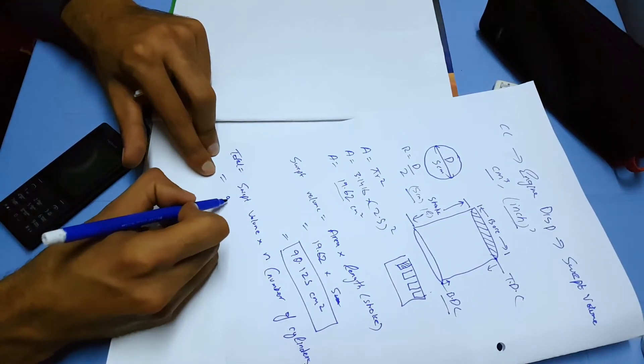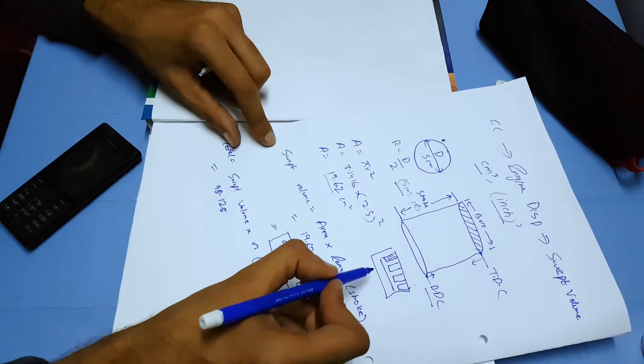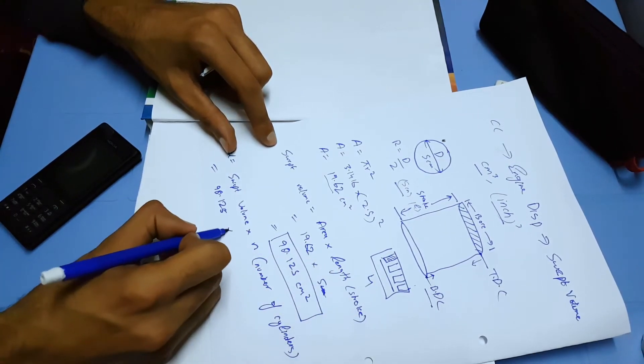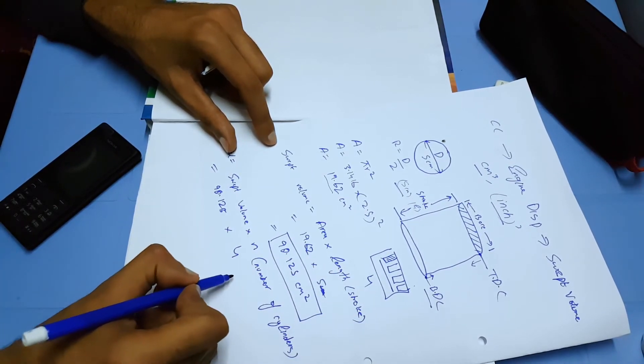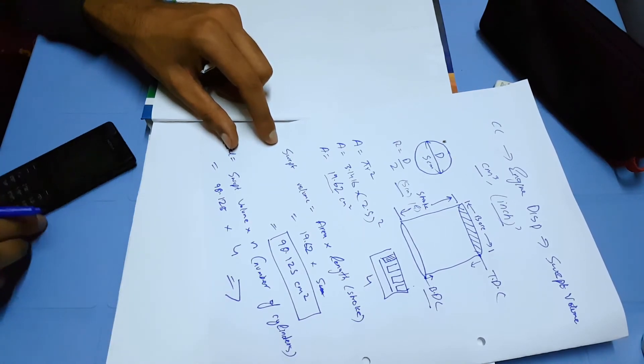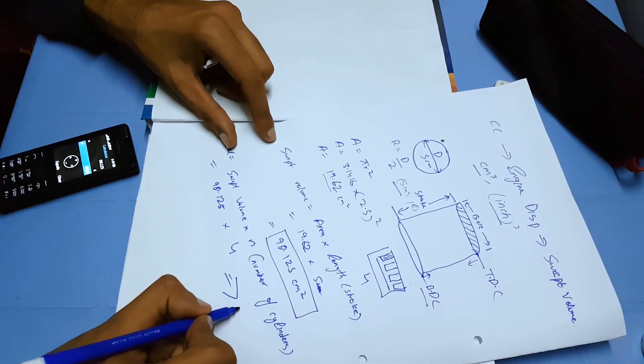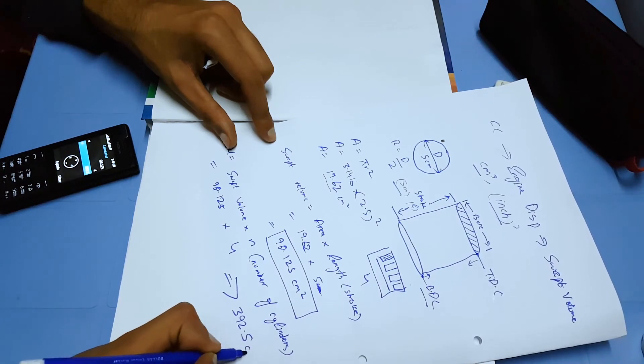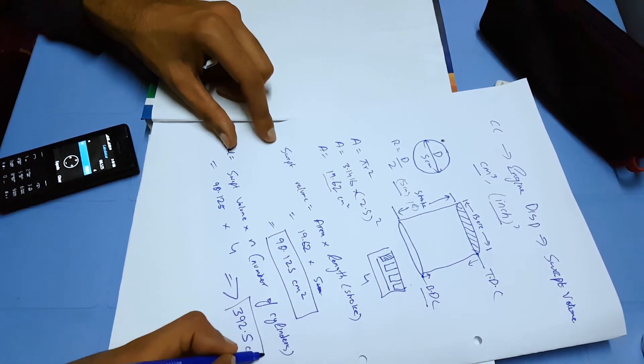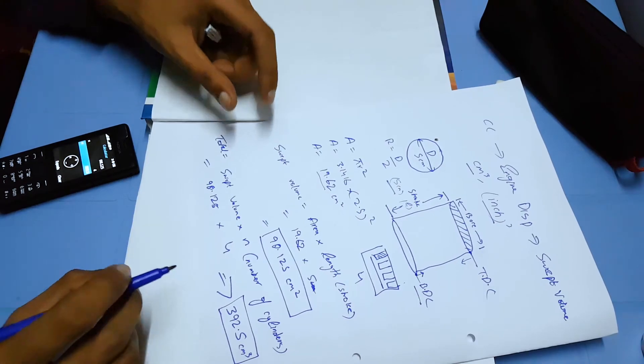So, swept volume is 98.125 and my engine has four cylinders, so I multiply this by four, which comes out to be 392.5 cubic centimeters. This will be your total swept volume or total CC of your engine.